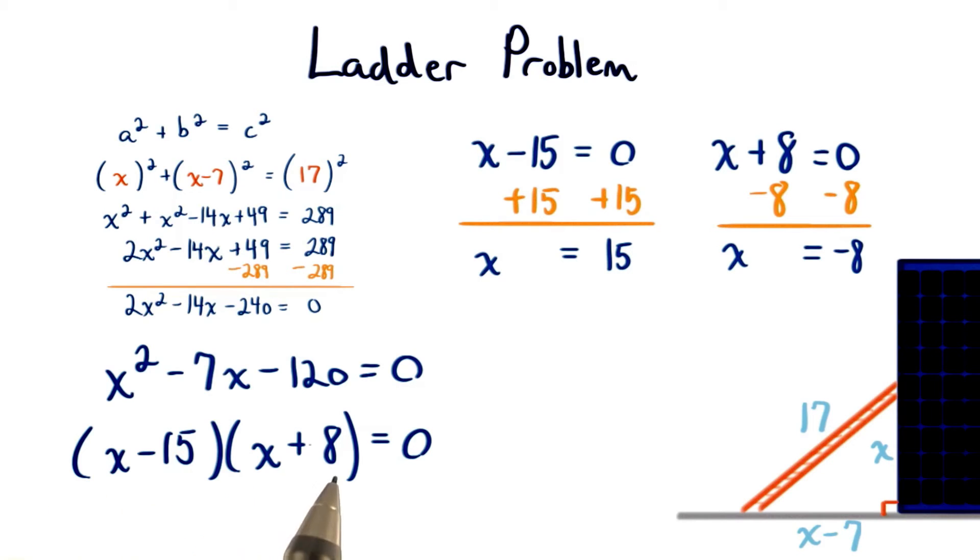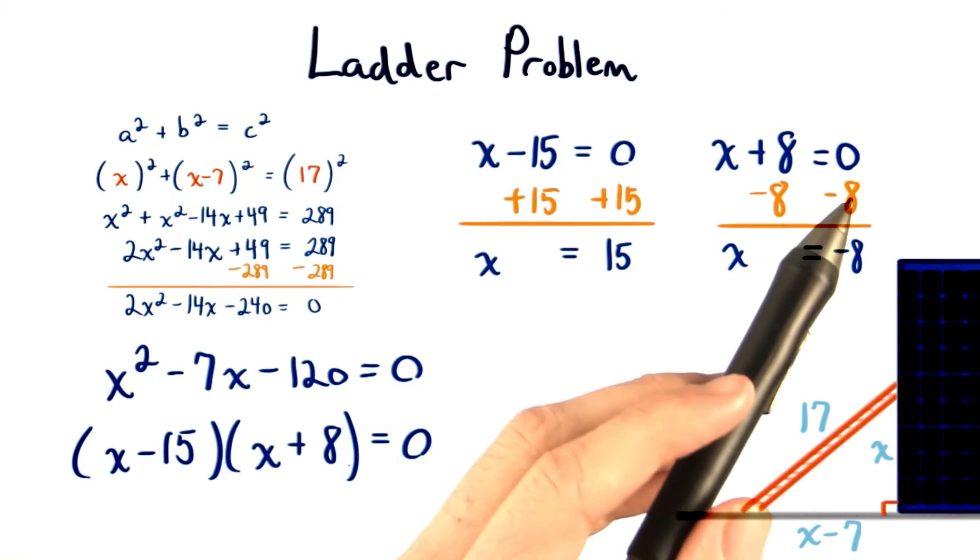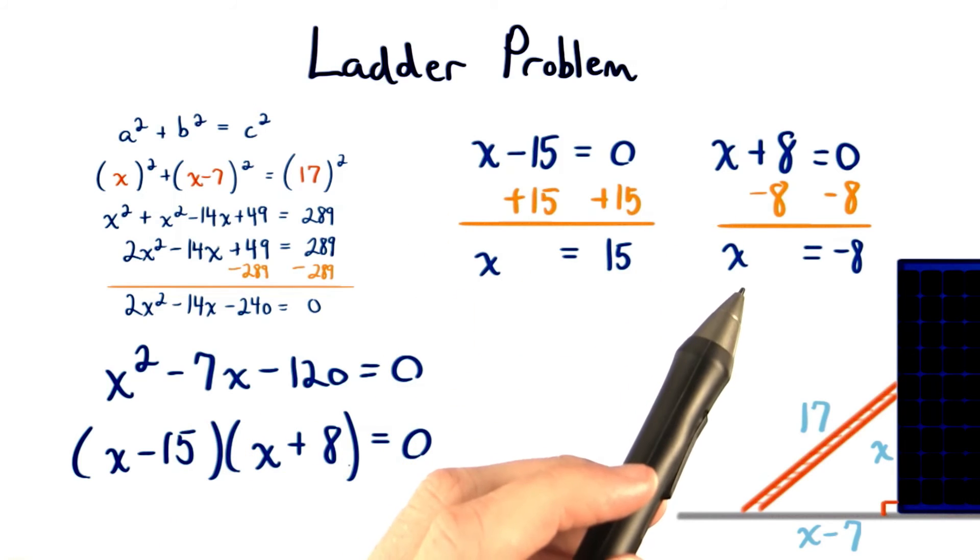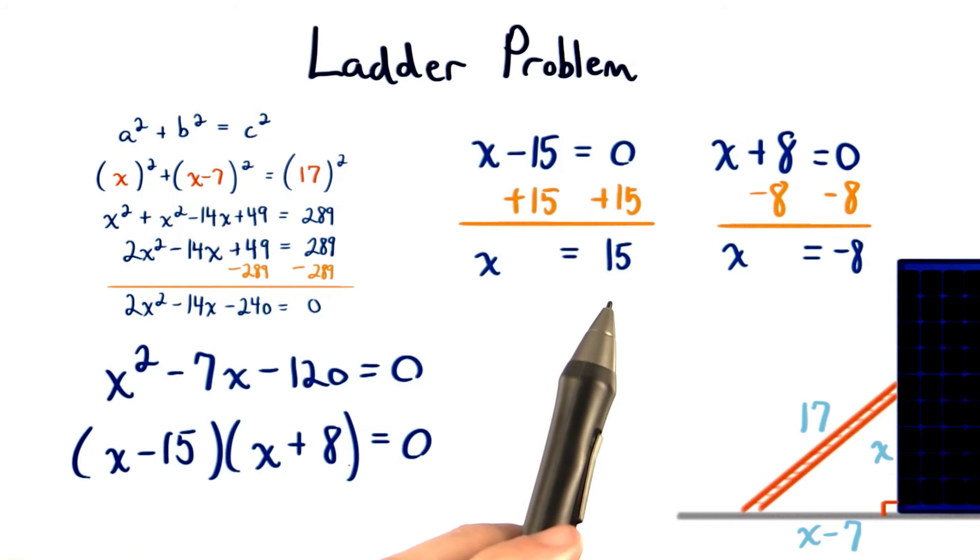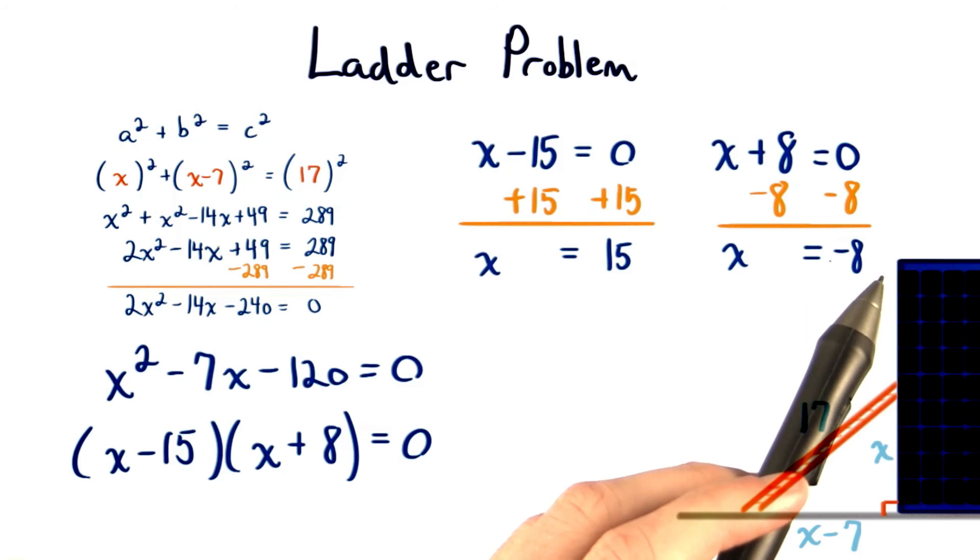We set each of these factors equal to 0, and then we solve for values of x. So x can equal positive 15, or x can equal negative 8.